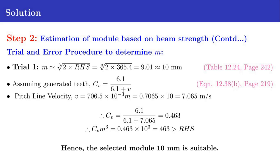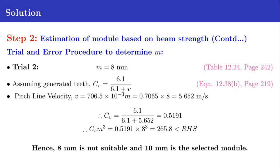Now we substitute the values: CV M cube equals RHS equals 365.4. By substituting CV equals 0.463 and M equals 10, we get 0.463 times 10 cube equals 463, which is greater than RHS 365.4. Hence 8mm is not suitable and 10mm is the selected module.